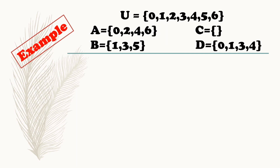Example: the universal set is equal to {0, 1, 2, 3, 4, 5, 6}. We have four different sets given. Set A is equal to {0, 2, 4, 6}. Set B is equal to {1, 3, 5}. Set C is an empty set. And set D is equal to {0, 1, 3, 4}.